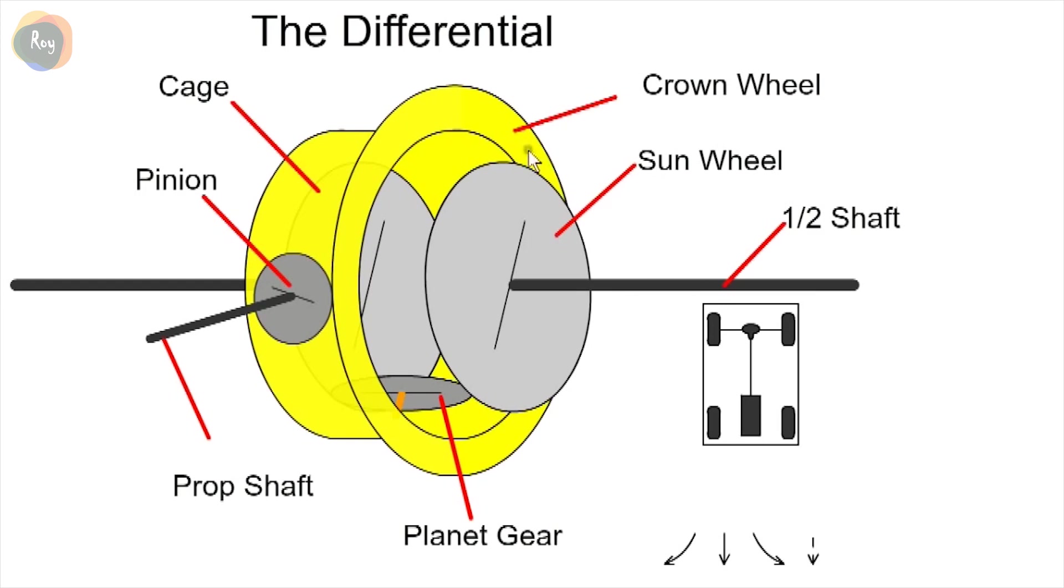With an open differential, the half shaft has the wheel attached at one end and the sun gear at the other. The sun gears are meshed with a planet gear which can rotate around the sun gear. Normally there are two planet gears but we only show one for clarity. Also we show the gears as plane wheels in this animation.